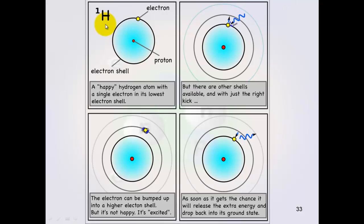So here we have the hydrogen atom. We've got the proton in the middle and the electron whizzing around the outside. It's a happy hydrogen atom with a single electron in its lowest electron shell. What happens here is that there are other shells. And with enough energy that electron can move up to the next shell. And here's the energy coming into the electron.